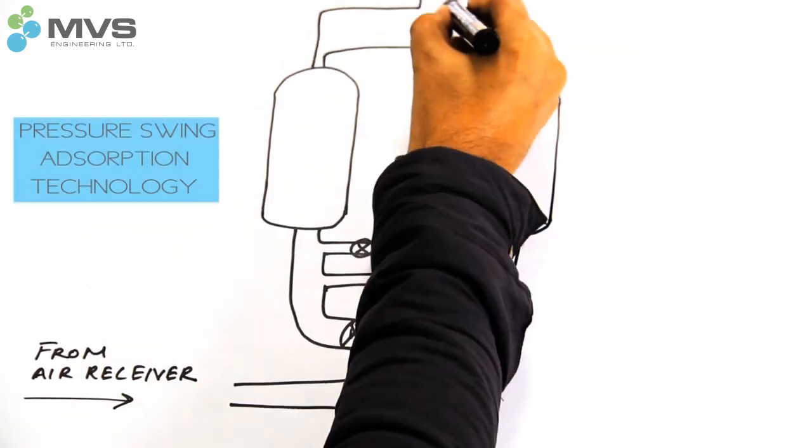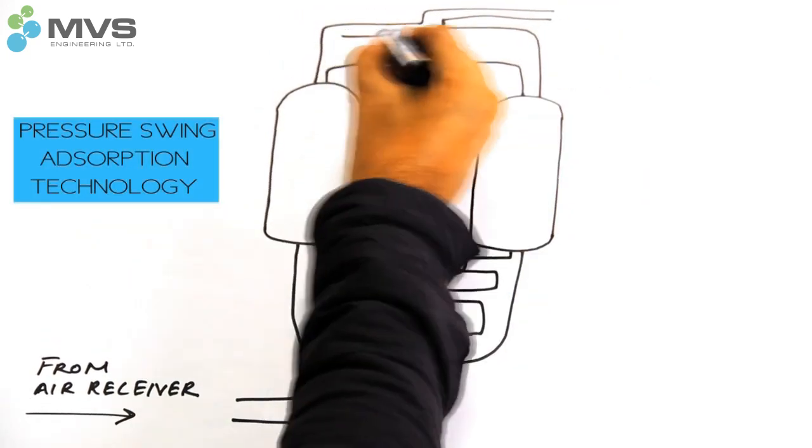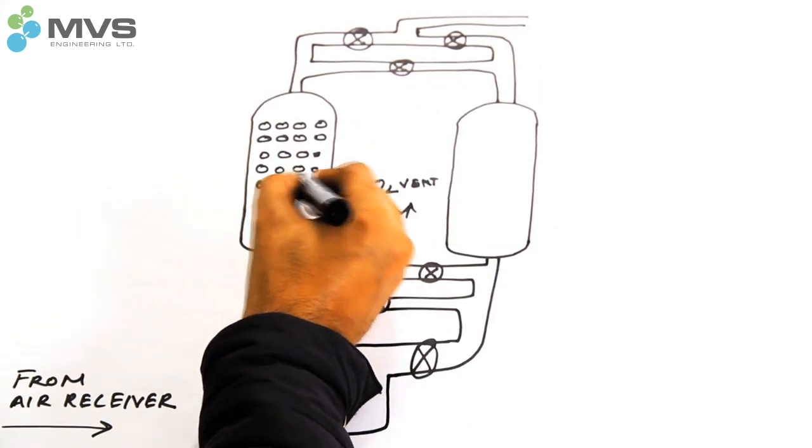Our system uses the pressure swing absorption technology, or PSA in short, for separating nitrogen from oxygen in the air.